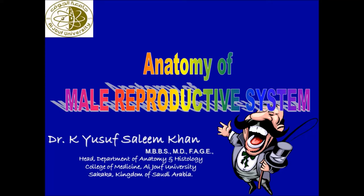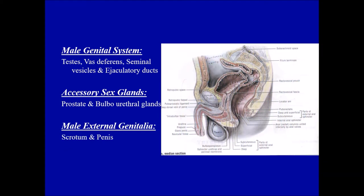Hi guys, today we'll discuss a very important topic: the anatomy of the male reproductive system. This is Dr. Yousaf signing from Al-Jouf University. To begin with, the male genital system or reproductive system consists of the testes, which is the main primary organ, then the vas deferens (also called the ductus deferens), the seminal vesicles, and the ejaculatory duct — all forming the main structures of the male reproductive system.